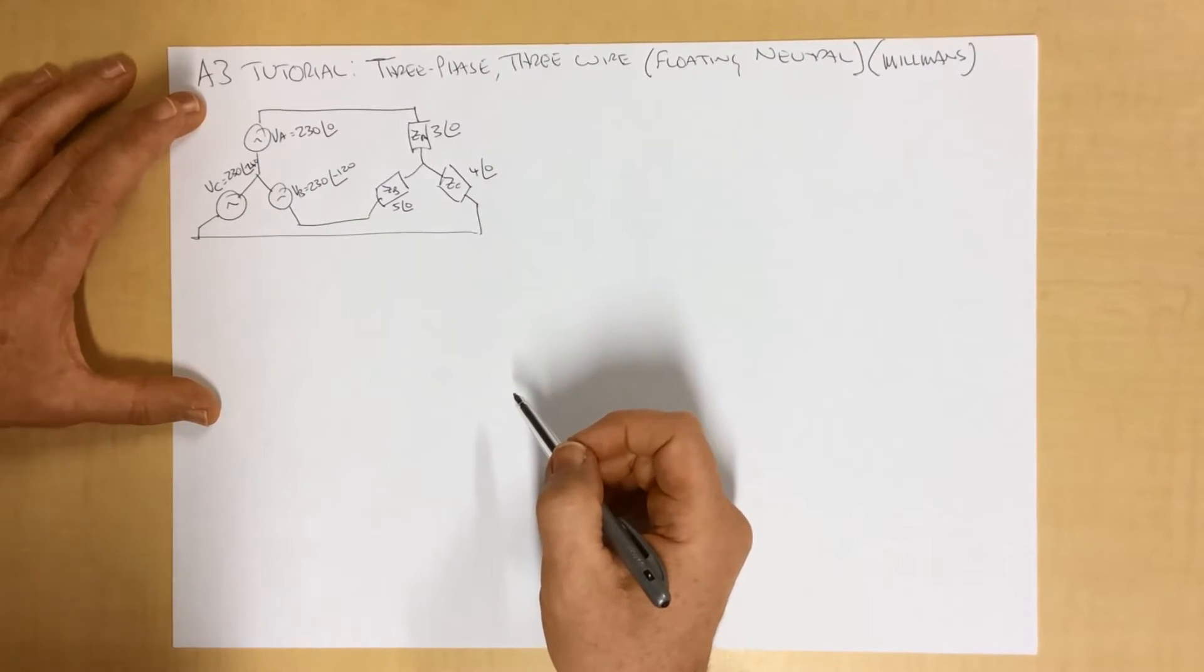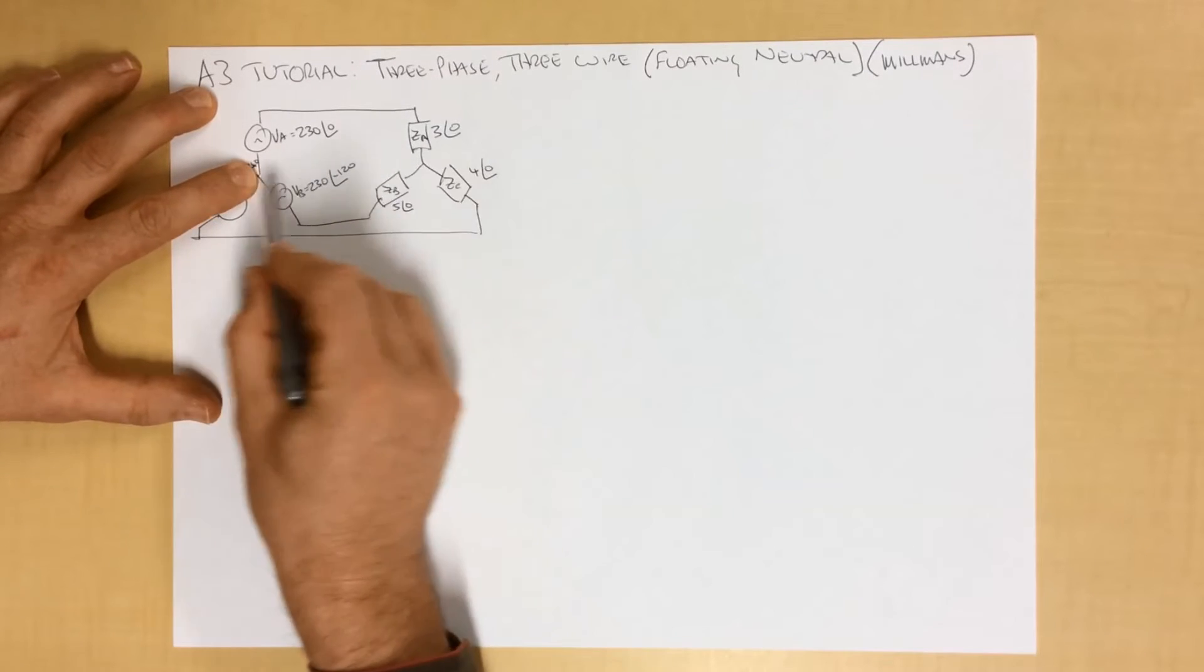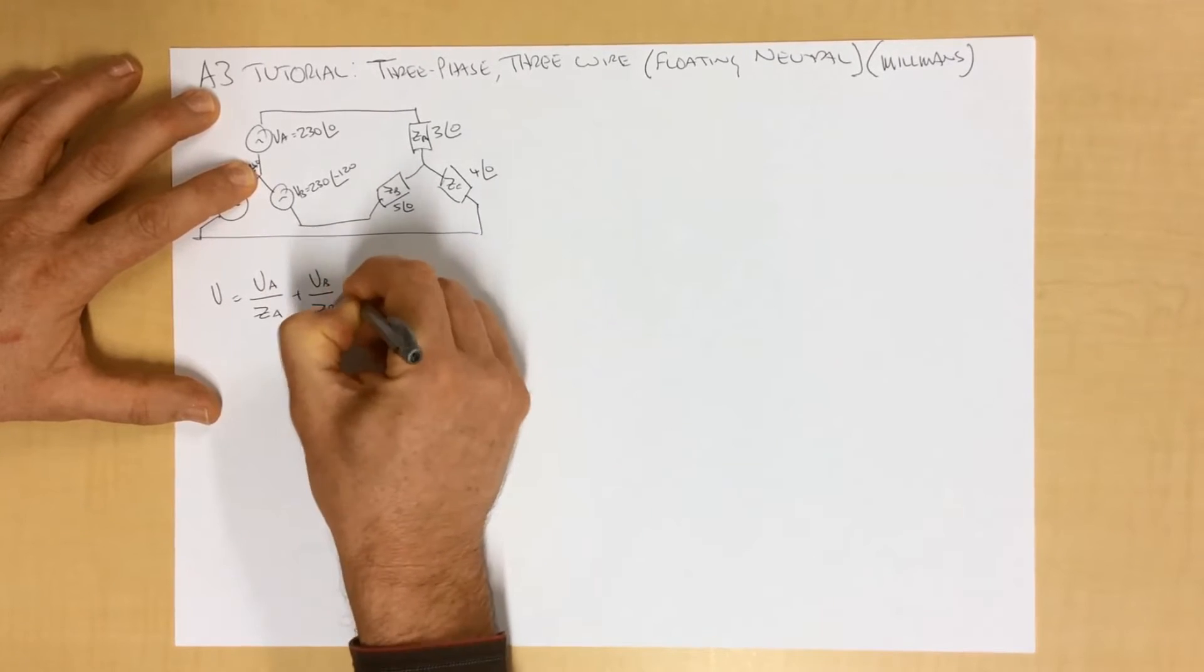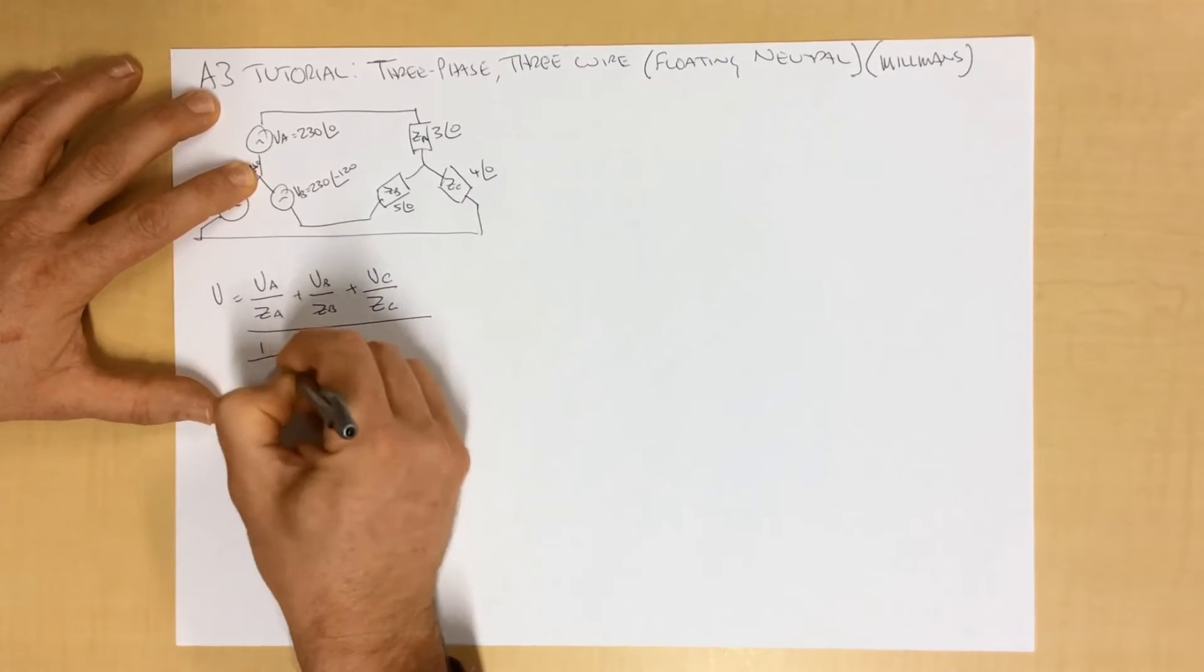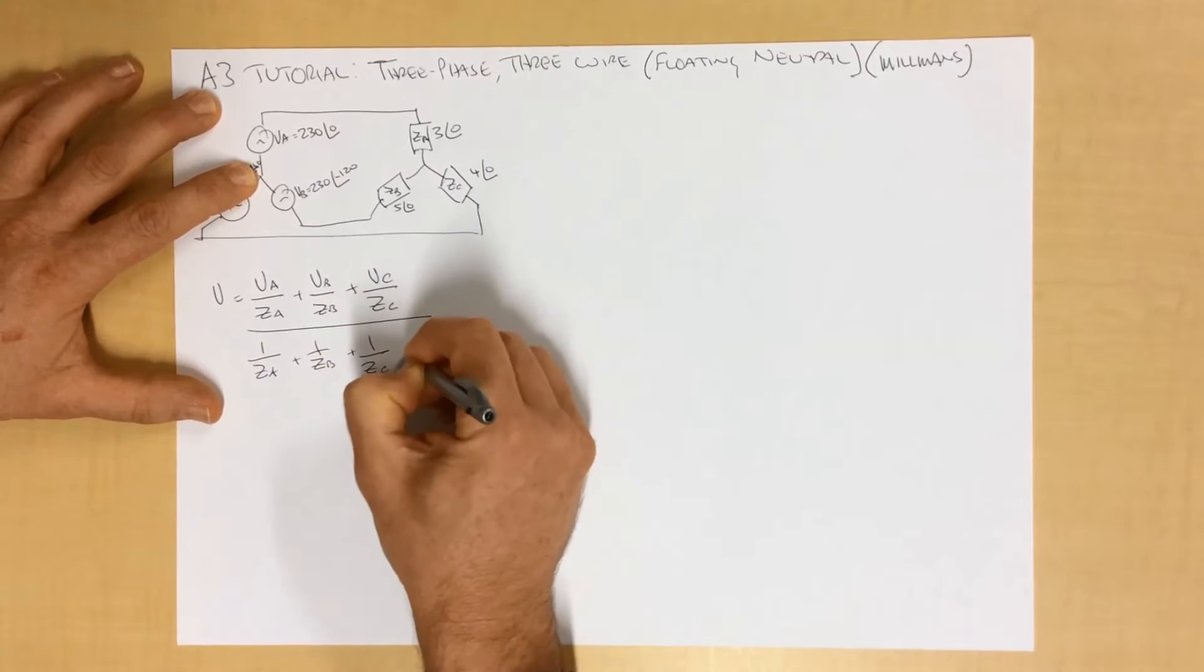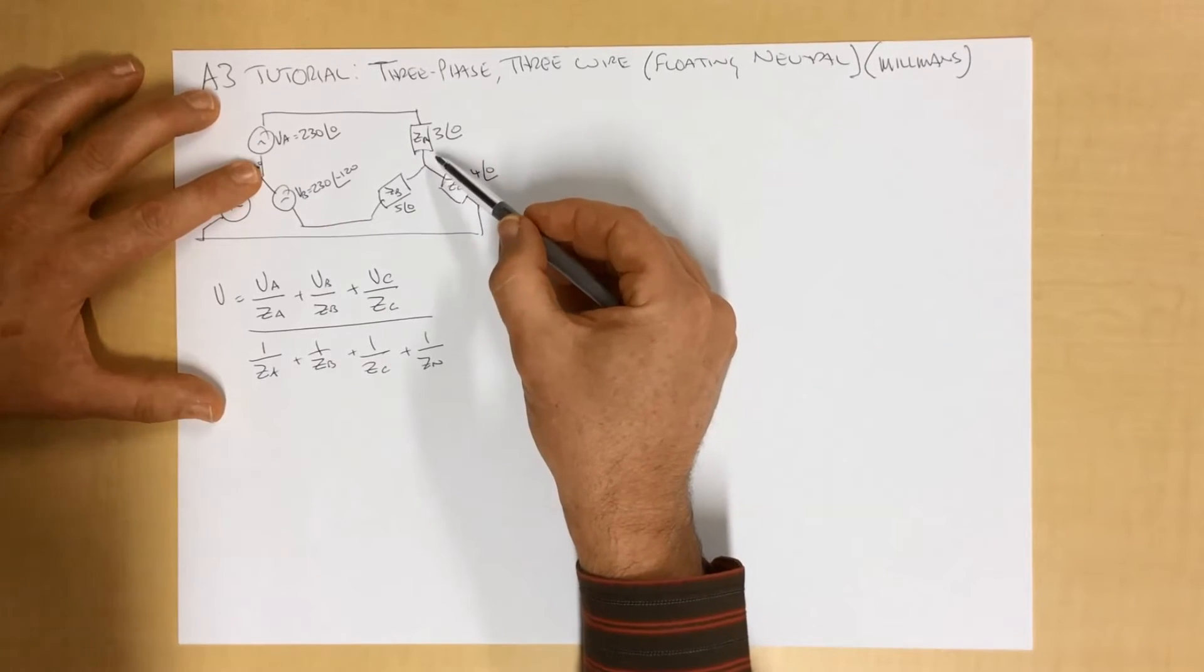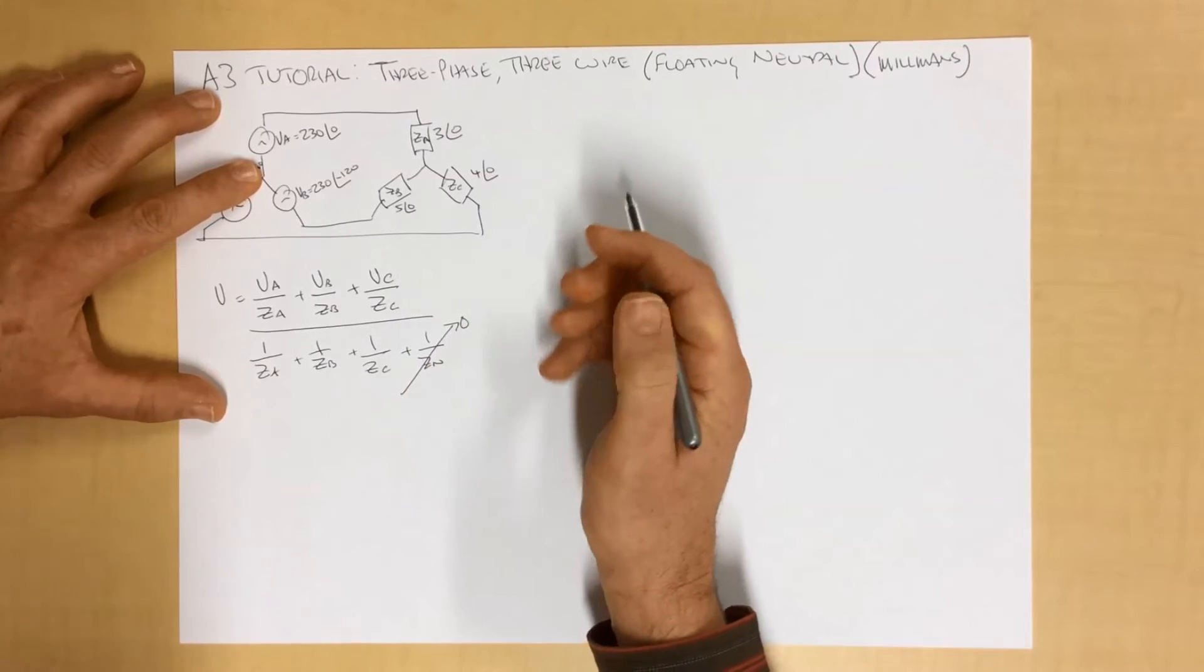And Millman's theorem is, it's a fairly large expression, but it's quite a simple expression. And it basically says that this voltage here, between here and here, is VA over ZA plus VB over ZB plus VC over ZC all over 1 over ZA plus 1 over ZB plus 1 over ZC plus 1 over the impedance between here. Now we don't have a wire connecting here, so therefore that's infinity. 1 over infinity is 0. So this term goes to 0, which makes life a little bit easier.